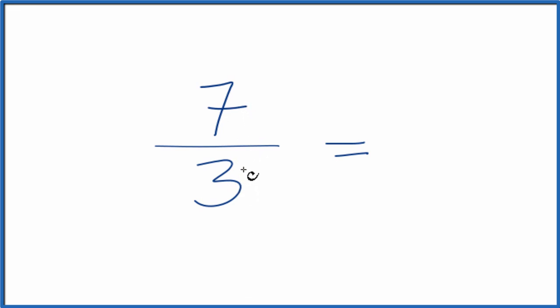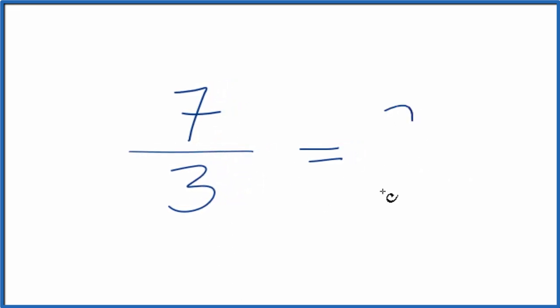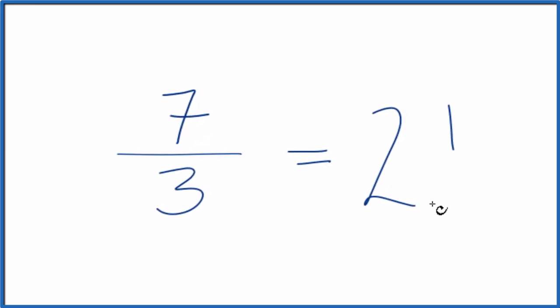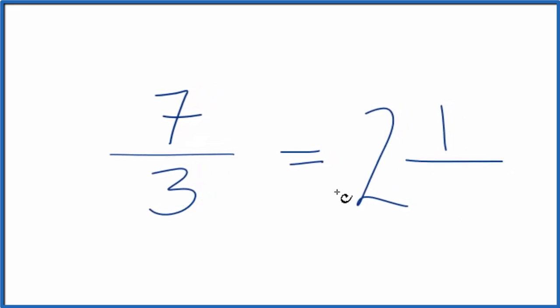Note that 7 thirds is an improper fraction, the numerator is larger than the denominator. So you could change it to a mixed number. 3 goes into 7 two times with 1 left over, and then we just bring the denominator across.